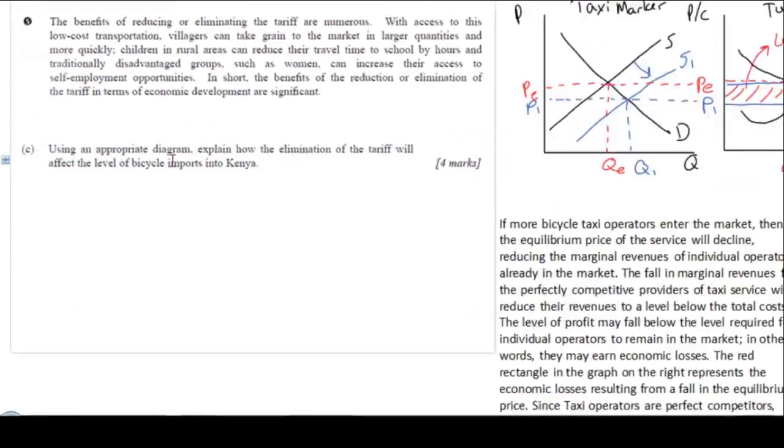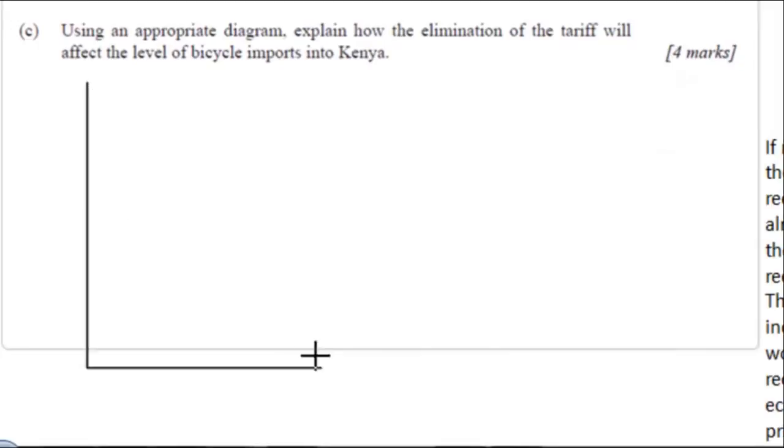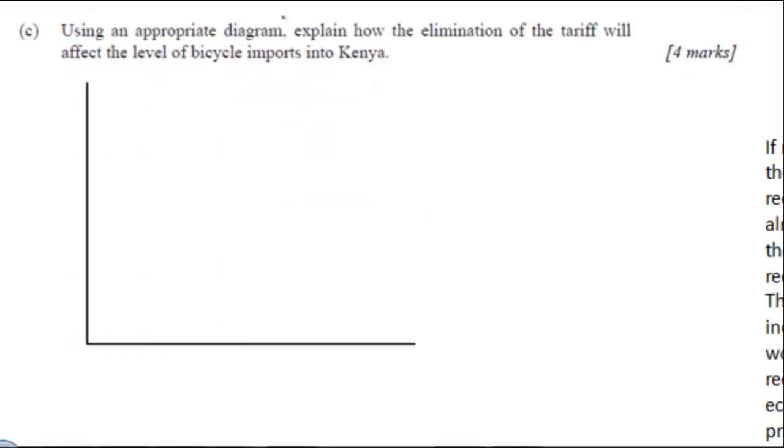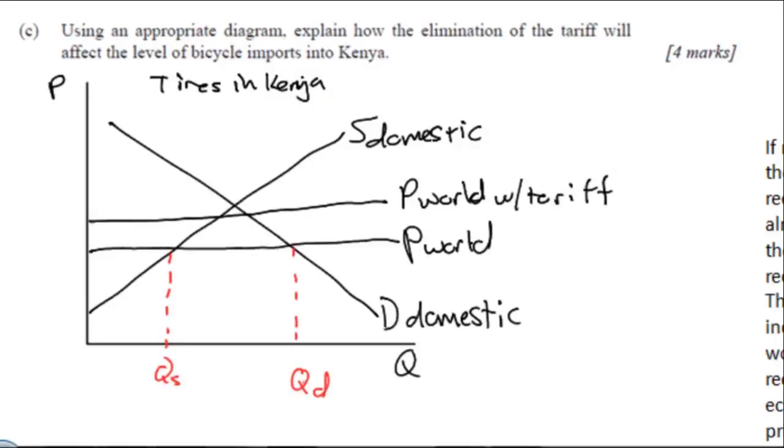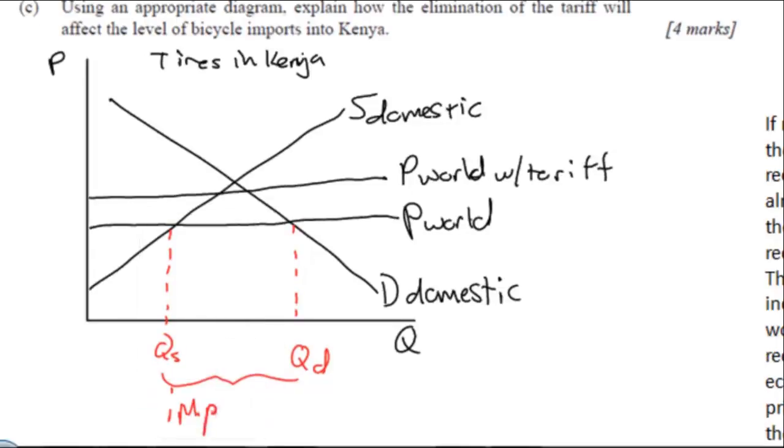Moving on to part C, we're now going to get into an international economics topic but it includes a microeconomics diagram. The effects of the removal of a tariff on bicycles in Kenya. First you want to draw your domestic supply and your domestic demand for bicycles along with the world price without any protectionism and a world price with a tariff. Here I've labeled the quantity of imports that would exist without a tariff, although I mislabeled it the first time. And with the tariff there would be clearly fewer imports due to the fact that imported bicycles are more expensive.